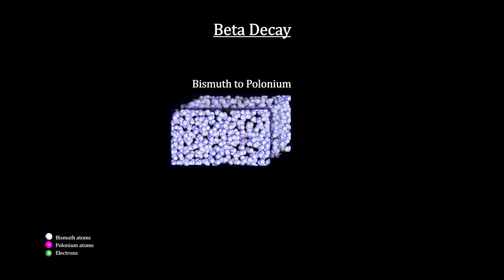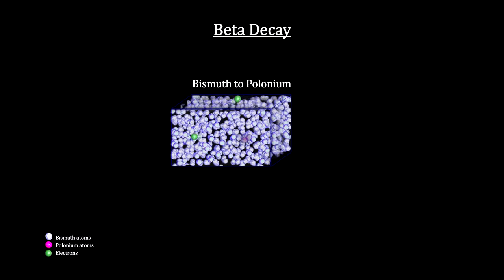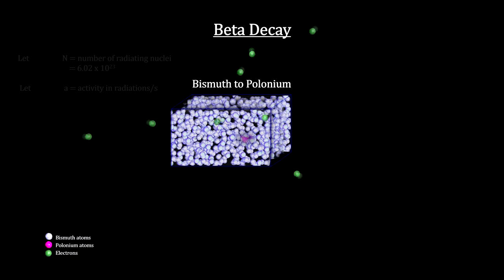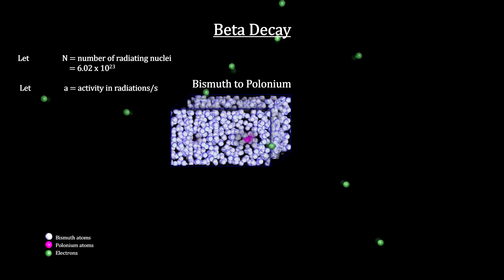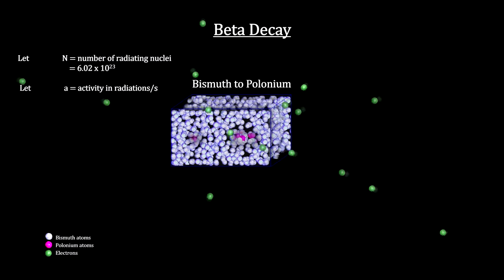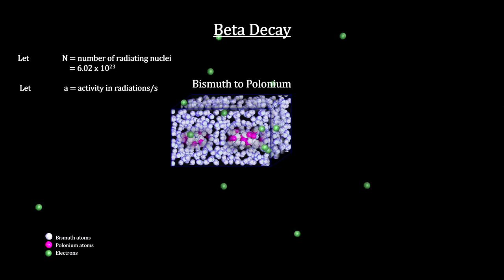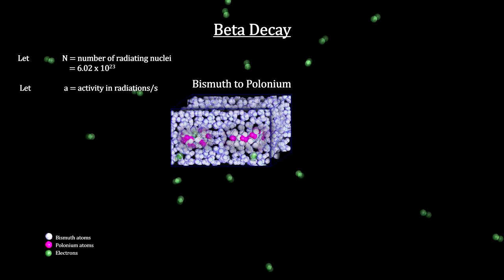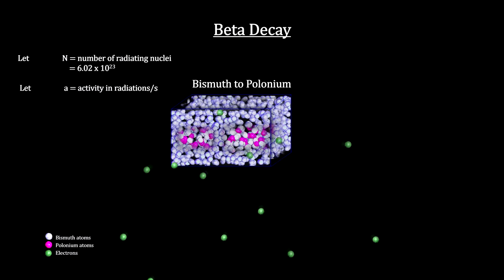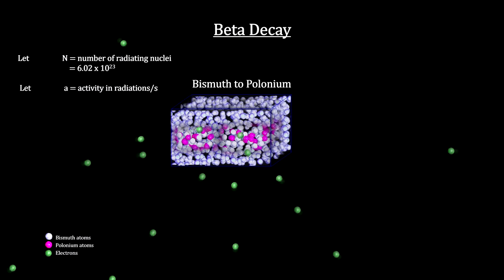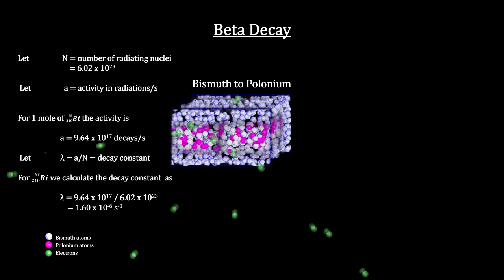In 1927, two physicists, C.D. Ellis and W.A. Wurster, set out to measure this energy. They used bismuth-210, a product of radium decay that itself decays into polonium. The rate at which unstable radioactive nuclei decay in a sample is called the activity of the sample — the greater the activity, the more nuclear decays per second. This is measured with devices like a Geiger counter. Given the number of radiating molecules in a sample and measuring the activity, we can calculate the probability for any one molecule to decay in a second. This is called the decay constant.